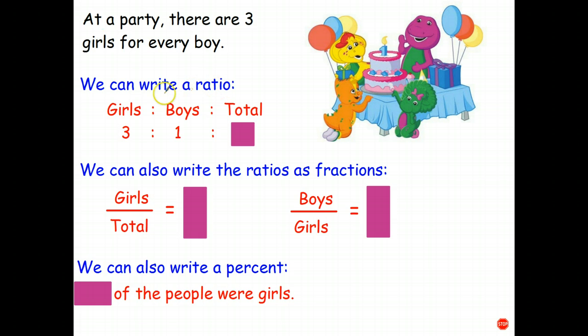So we can write a ratio, girls is to boys. And often when you're writing ratios, it helps to put a total in as well. So the ratio of girls is to boys means in total, there's three parts girls to one part boy. That means there's going to be in total four parts. So sometimes putting in a total will help us with some of our questions that we're solving.